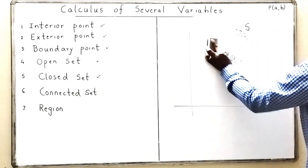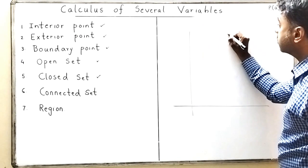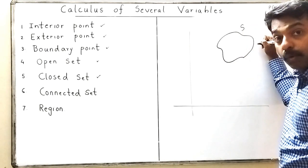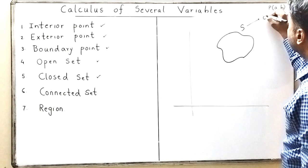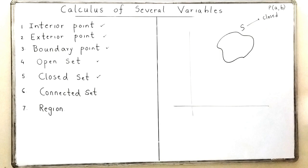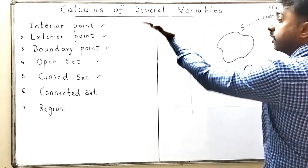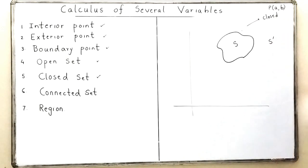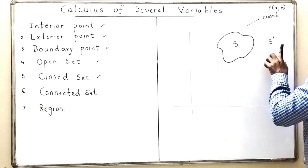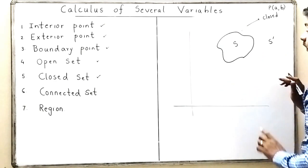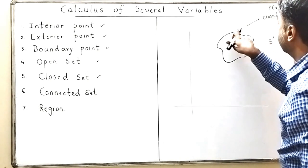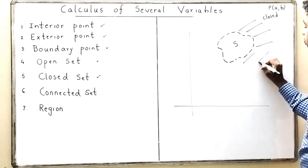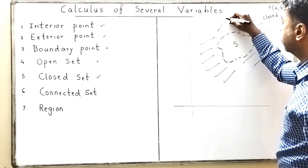Now let us define what is meant by a closed set. I take a set S and I am including the boundary also — the people sitting on the boundary are also points of my set S. To check if this is a closed set, I go outside the set S and take the complement of set S. If S has the boundary, then S complement means the outside part — it will not have the boundary. I shade S complement, which is everything outside S.